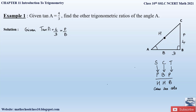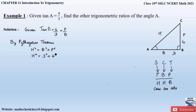Since it is a right-angle triangle, we apply the Pythagorean theorem: hypotenuse squared equals base squared plus perpendicular squared. So hypotenuse squared equals 3 squared plus 4 squared, which is 9 plus 16, which is 25. Therefore hypotenuse equals the square root of 25, which is 5.